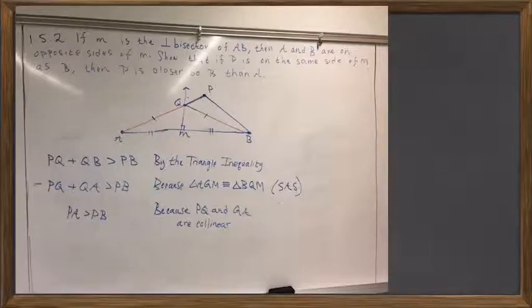So in this figure, P is on the same side of the bisector from A to B as A was. So P is sort of located to the right, if you like. And we then showed that PB was less than PA. P is closer to B than it is to A.